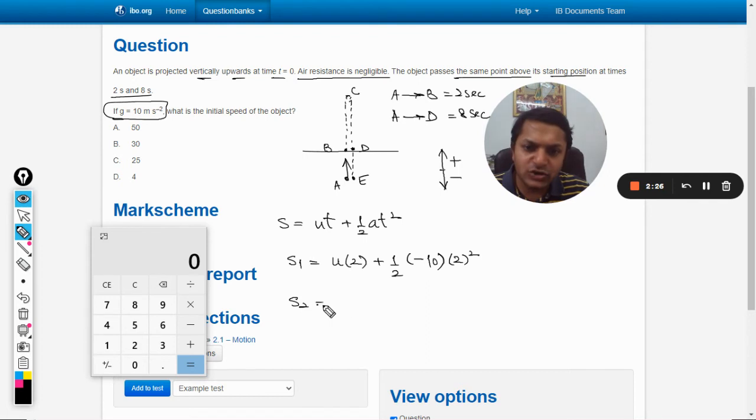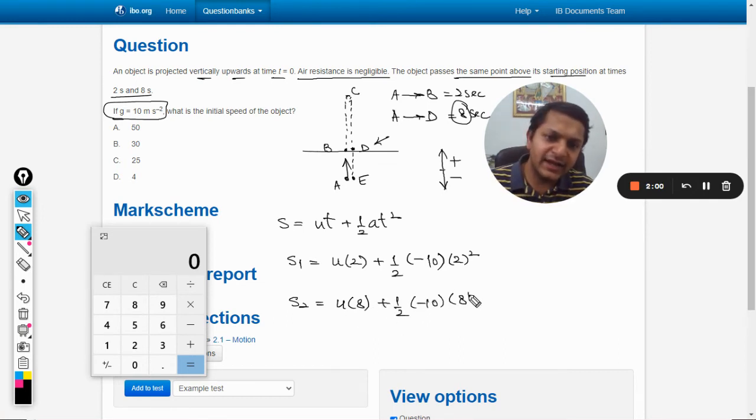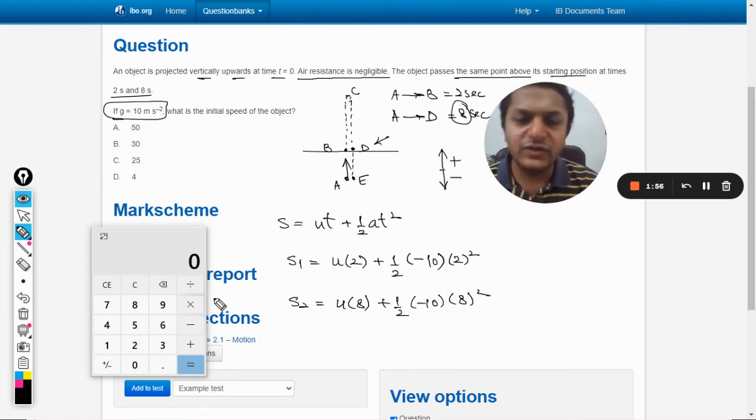Similarly, S2 is now after 8 seconds. Its position is at D. So what is the net displacement now? Because A will be treated as the origin, so the net displacement is now always to be recorded from point A only. So that will be eventually equal to S1. So it will be u into 8 plus half minus 10 and the time taken is 8 seconds.